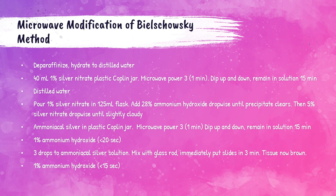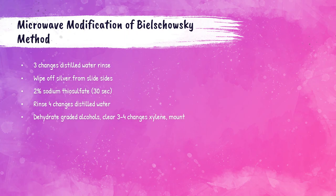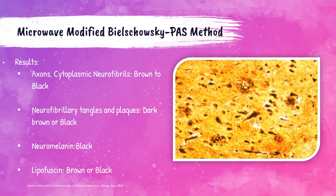Rinse tissue slide in three changes of distilled water. Any mirrored silver on the sides of the slides can be wiped off carefully without touching the tissue. Place in 2% sodium thiosulfate for 30 seconds, then rinse in four changes of distilled water. Dehydrate with graded alcohols, clear in 3–4 changes of xylene, and mount with synthetic resin. When stained, axons and cytoplasmic neurofibrils will be brown to black; neurofibrillary tangles and plaques will be dark brown to black; neuromelanin (a brain tissue pigment) will be black; and lipofuscin will be brown or black.